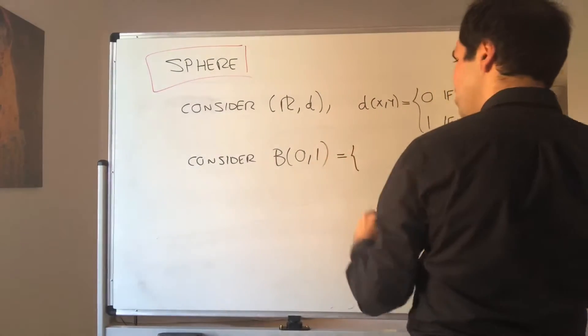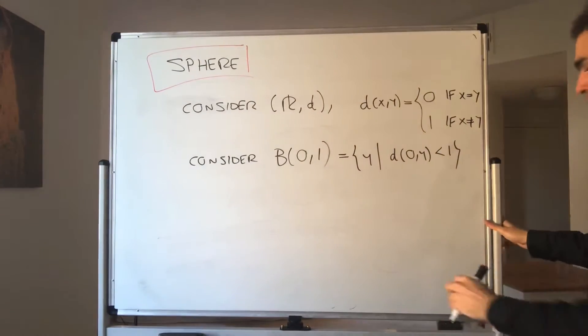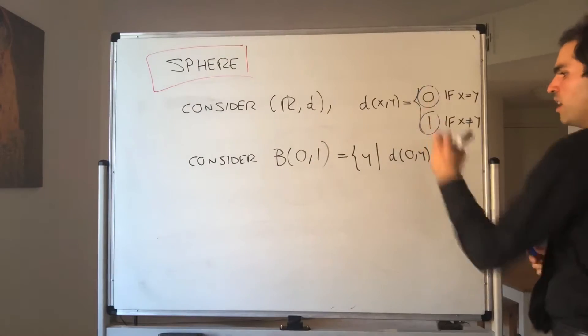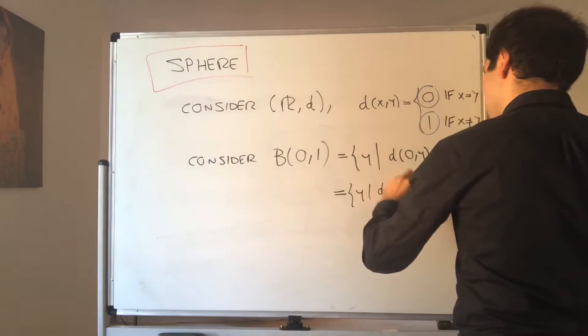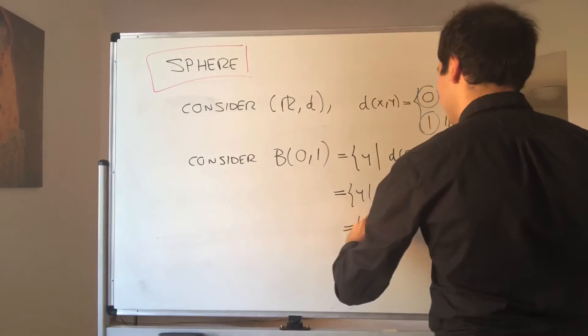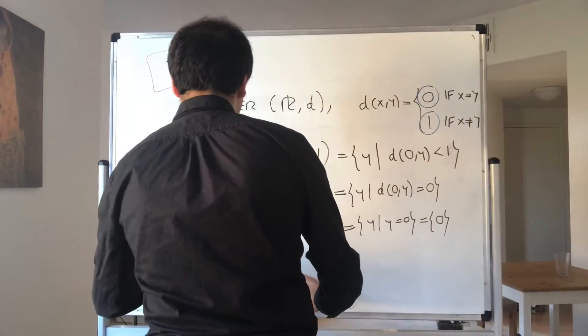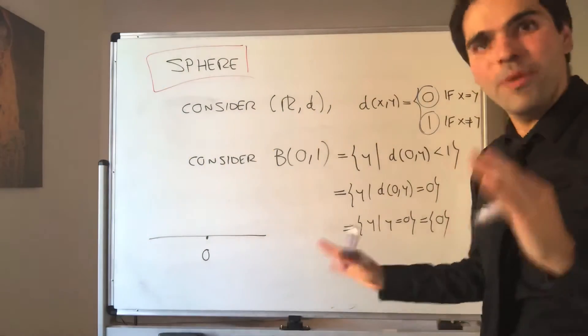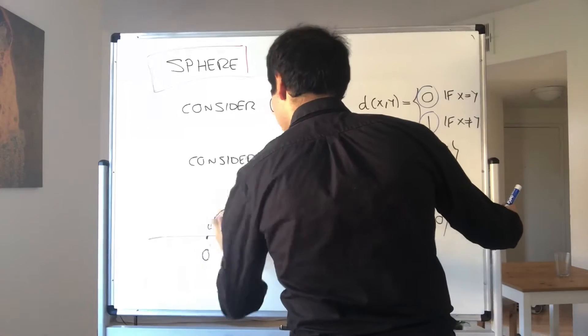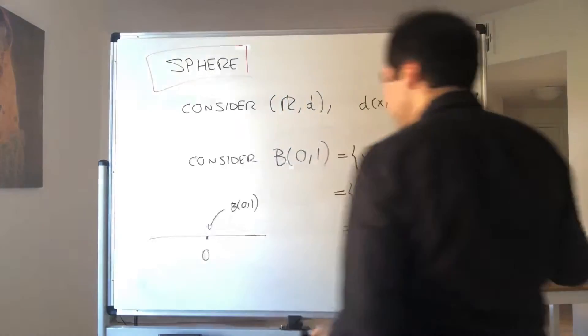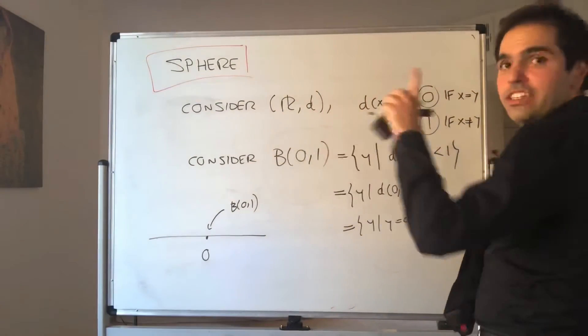Now, what is this thing? By definition, it's a set of y such that the distance between zero and y is less than one. But notice, this metric only takes two values, zero and one. So the only way this metric can be less than one is if it's zero. But that just means that y equals zero. So it's just the zero set. So in other words, the ball centered at zero and radius one is just the point zero.